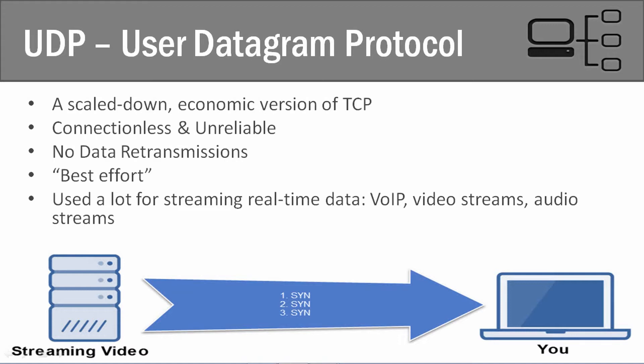Let's think about some examples — I put some on the screen. For example, some real live time data that's streaming. For example, a phone call if you're doing Voice over IP. You're going to have some data loss — some of that connection where the audio doesn't come through — but you're still able to understand what the person's saying. It makes it a lot more economical for you in regards to how much data you need to transmit and how much you pay your internet service provider, and also more economical for them to scale up their network to support VoIP.